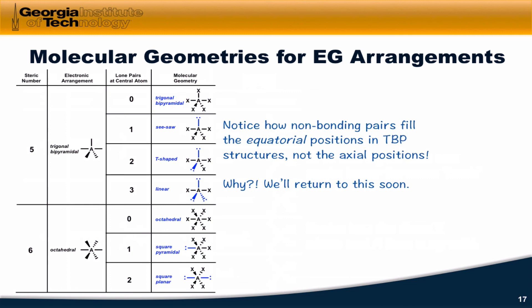For the octahedral geometry, with zero lone pairs we have an exact match between the geometry and electron group arrangement: octahedral and octahedral. With one lone pair, remember it doesn't matter where we put that lone pair because all six positions are equivalent in the octahedral structure. No matter where we put it, we arrive at a square pyramidal structure, where four of the x atoms form a square plane and the other x atom is in an axial position above that plane. With two lone pairs, the two lone pairs are placed at opposite positions at a bond angle of 180 degrees rather than 90 degrees, to get them as far apart from one another as possible, and the four remaining x atoms form a square planar molecular geometry.